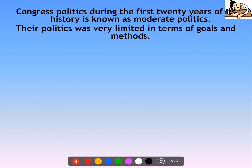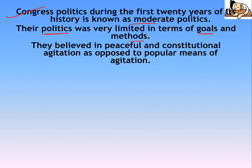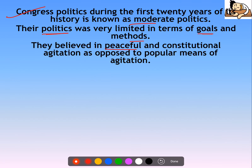Let's give a little introduction. Congress politics during the first 20 years of its history is known as moderate politics. Their politics was very limited, both in terms of goals and methods. They relied on peaceful methods and constitutional agitation, as opposed to popular means of agitation.